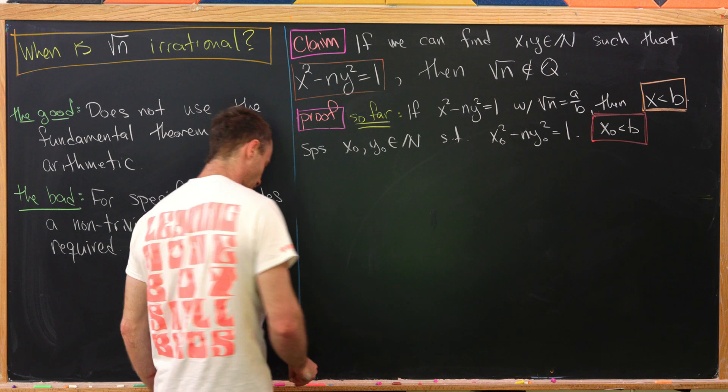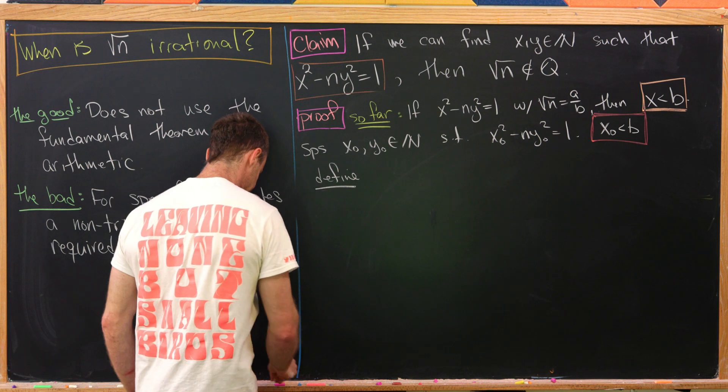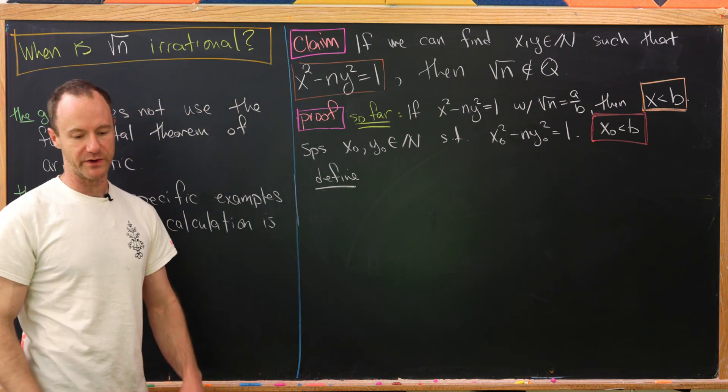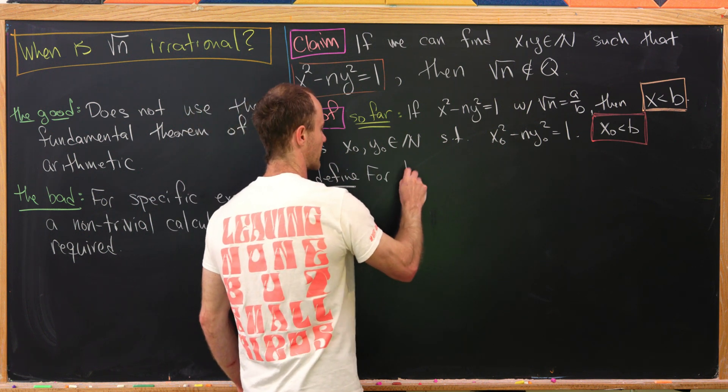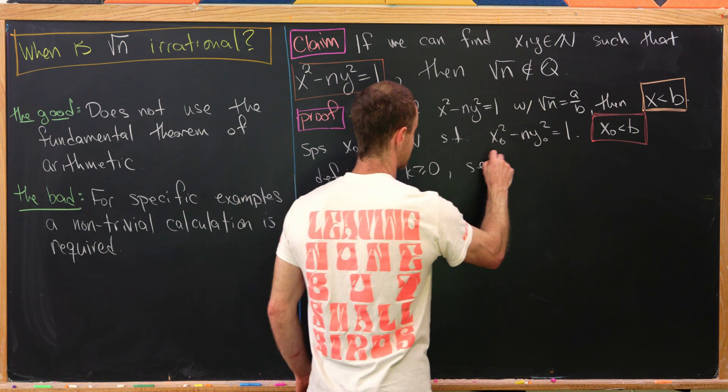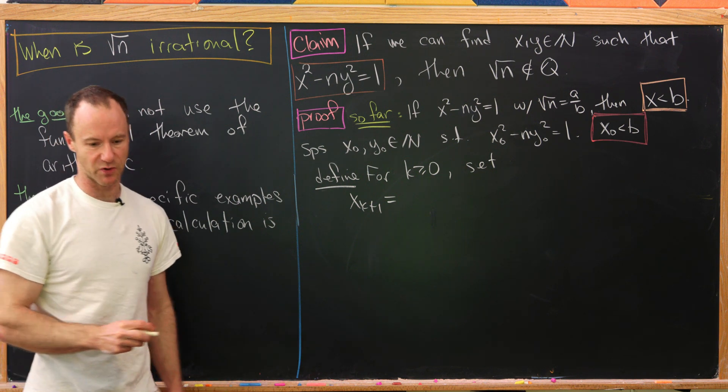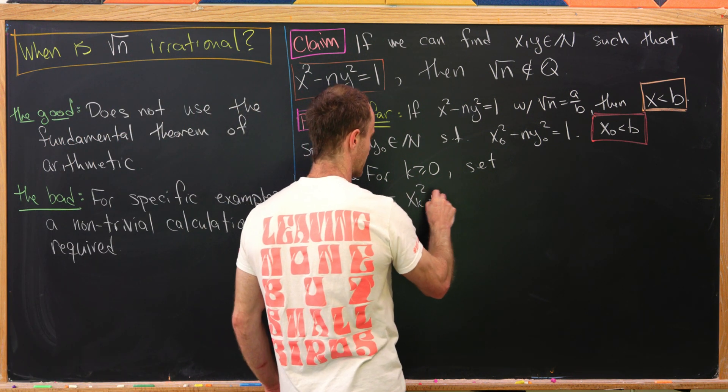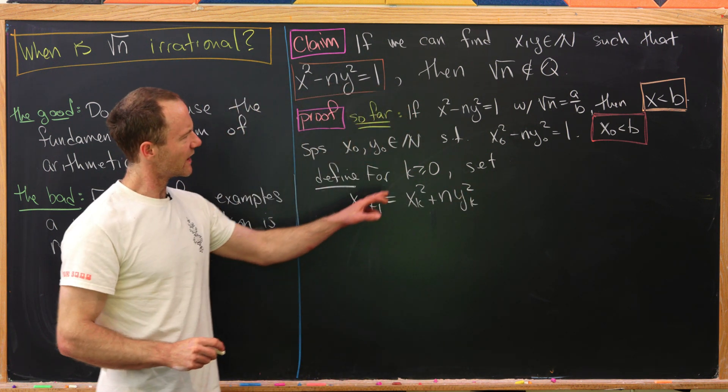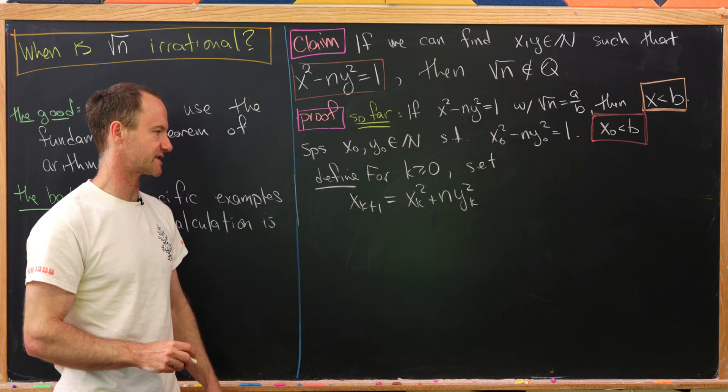Then we're going to recursively define a sequence out of these two seeds, x naught and y naught. For k bigger than or equal to 0, we set x sub k plus 1 equal to the following expression: x sub k squared plus n times y sub k squared. It's pretty similar to what's happening here on the left-hand side of our equation, just with a plus sign.